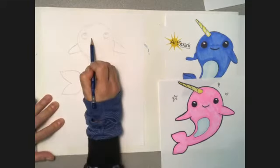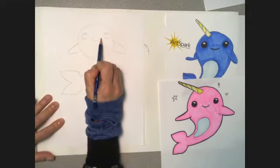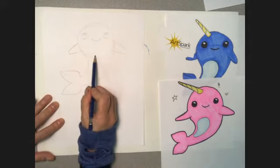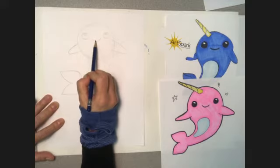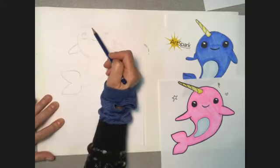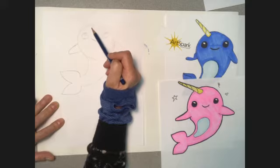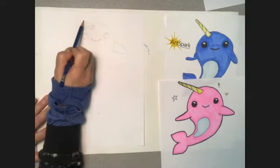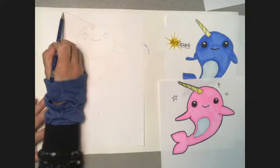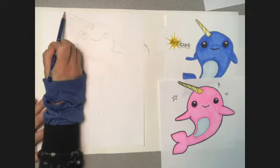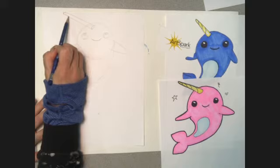When we do the kawaii style, we also do the mouth really close to the eyes. So we don't want the mouth down here; we want it close to the eyes up here. And then the narwhal has this horn in the center of his head. So we're going to make an oval; that's going to be the base of our horn. It's going to come out and get a little wider at the bottom, so it turns not quite a point at the top.